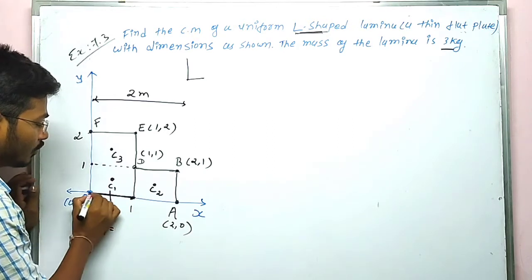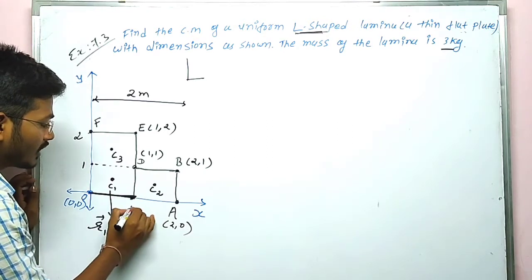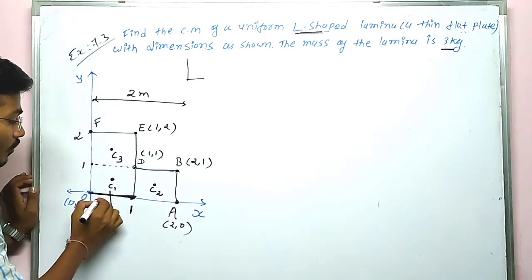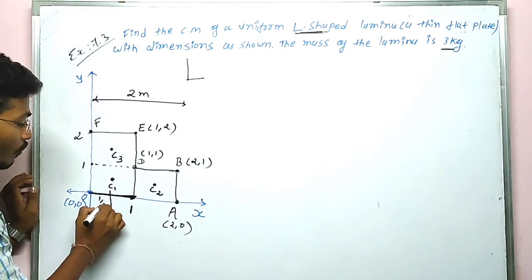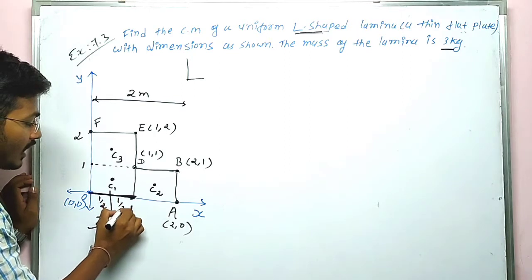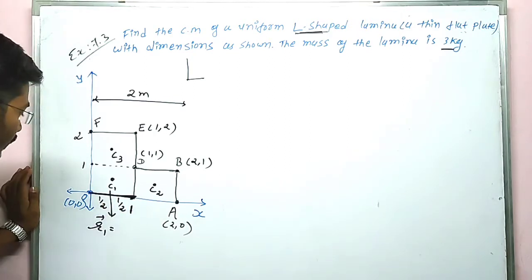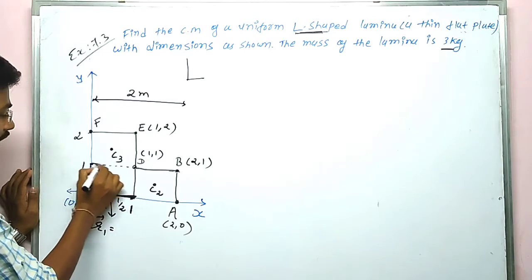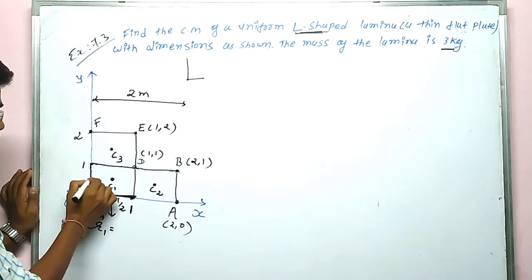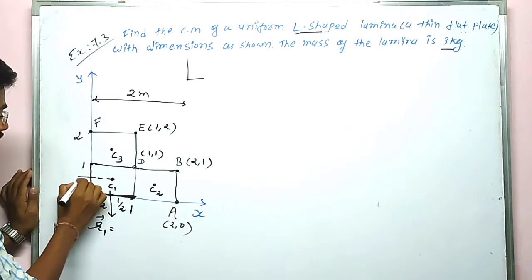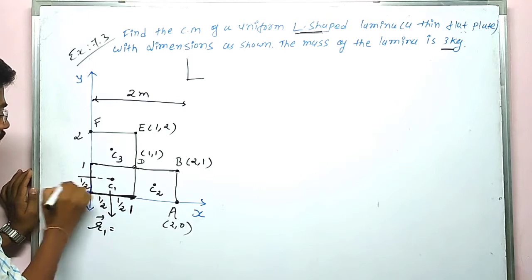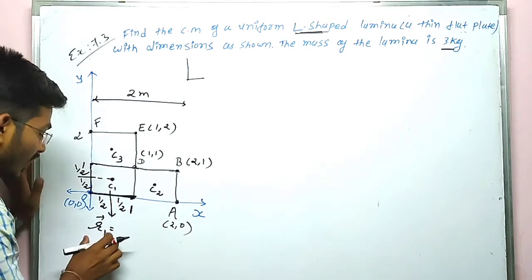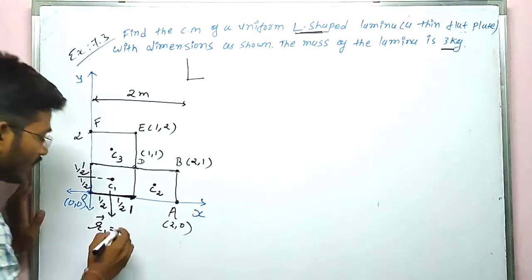For center c1, we find the position vector r1. The coordinates of c1 are x = 1/2 and y = 1/2. So the position vector r1 is (1/2, 1/2).